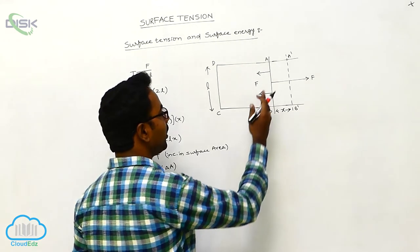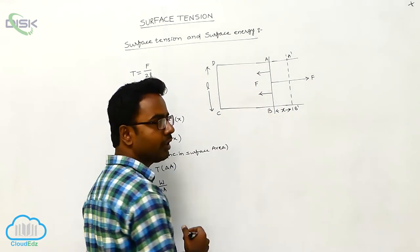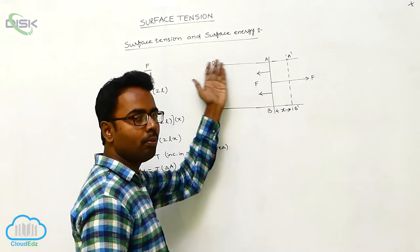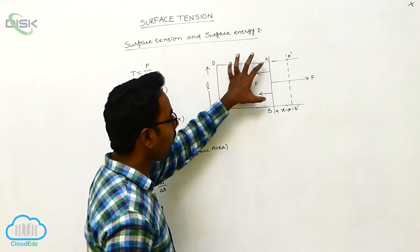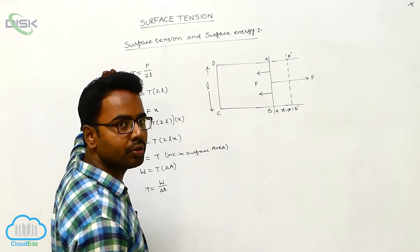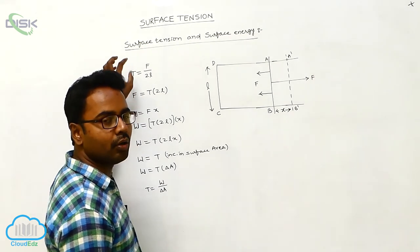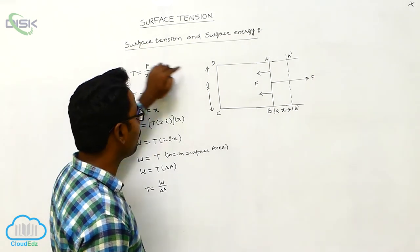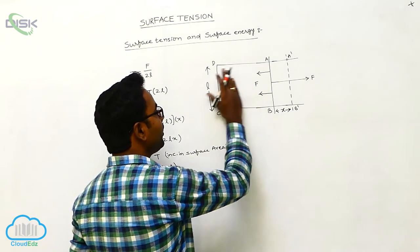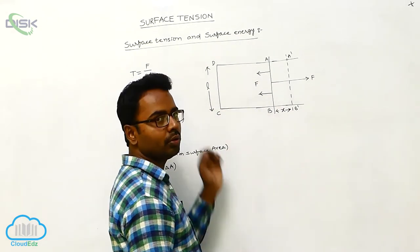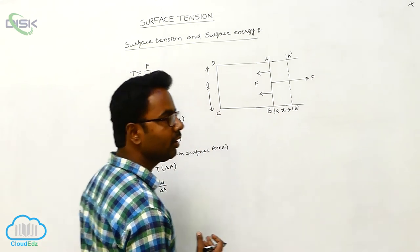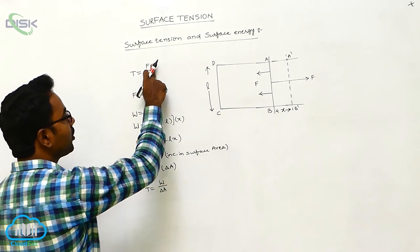Both the top and bottom surfaces try to have minimum surface area, and to achieve this they pull the wire AB to the left side with a force F. According to the surface tension definition, surface tension T is equal to force acting per unit length: T = F / length. The upper surface pulls along length L and the lower surface also pulls along length L, so totally both surfaces pull the wire AB with a total length of 2L.